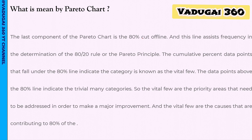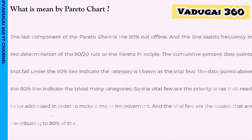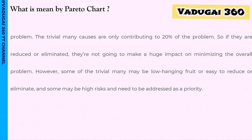What is meant by Pareto chart? The Pareto chart is based on the 80-20 principle. It is derived from the Pareto principle. In the 80-20 principle, the Pareto chart helps identify the most significant variables — high risk items that need to be addressed as a priority.